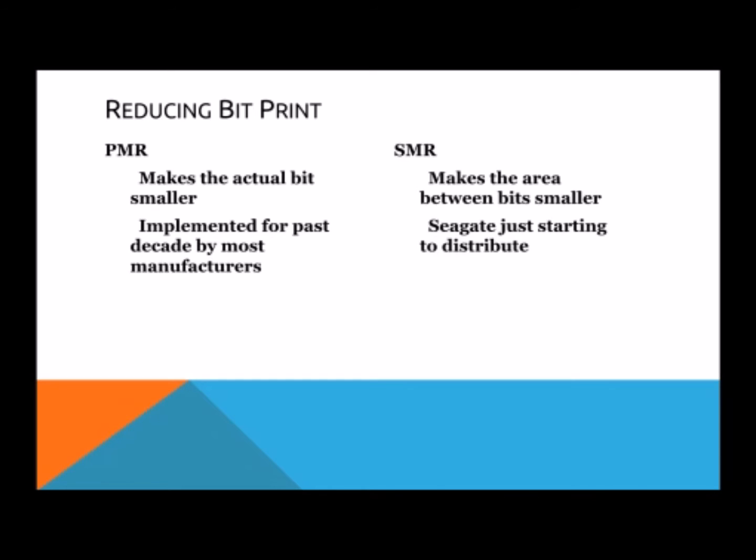There's PMR and this actually makes the bit size smaller. The bit is approximately 75 nanometers. The goal of PMR is to make it smaller than 75 nanometers. This has been implemented for the past decade around 2004 by most manufacturers. SMR on the other hand wants to make the area between the bits smaller, the buffer zone that separates the bits. Seagate has just started to distribute hard drives implementing SMR technology.